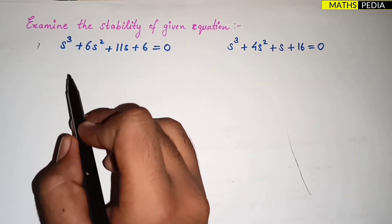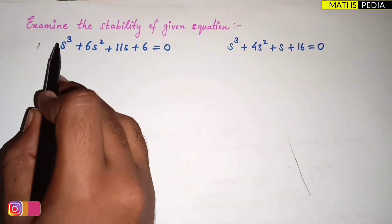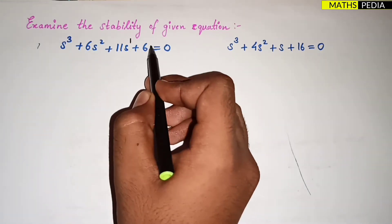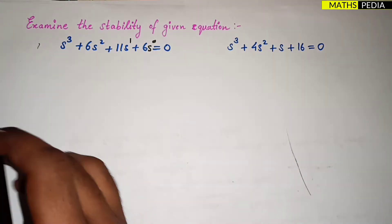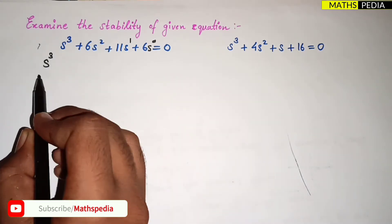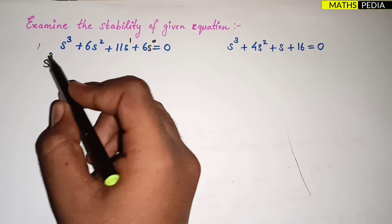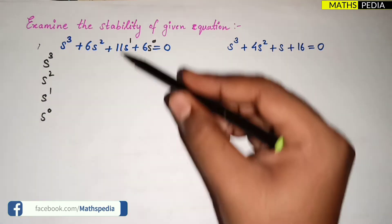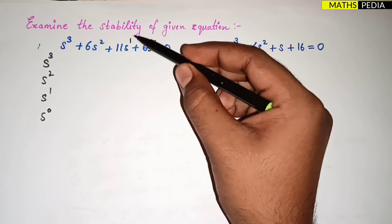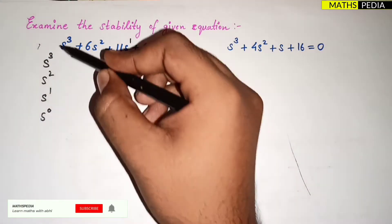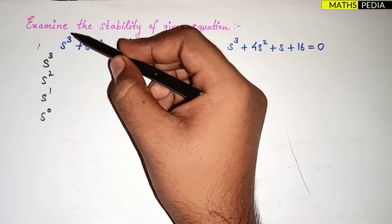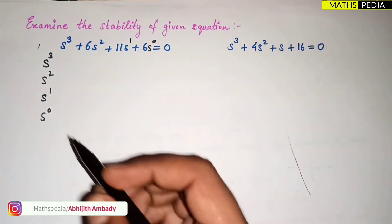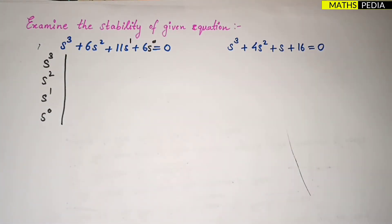The first step is to form the Routh array. The highest power here is s³, so we list powers in descending order: s³, s², s¹, s⁰. Sometimes a term may be missing from the equation, but you still write all powers from the highest down to s⁰. Draw a line after listing the powers.